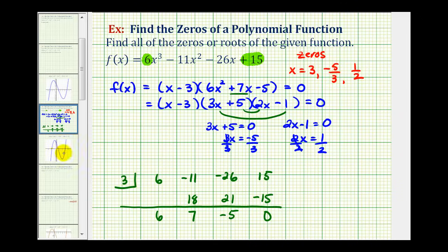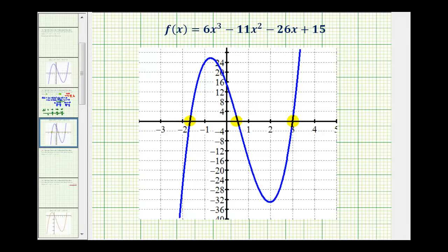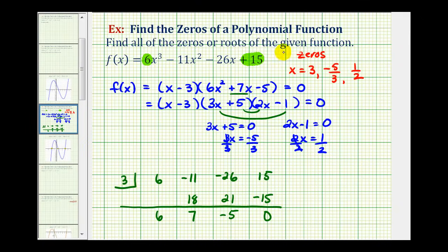But if we go back and take a look at the graph, we can pretty easily verify this is x equals negative 5/3, or negative 1 and 2/3. Here's our zero of positive 1/2, and of course, our zero of positive 3. Okay, that's going to do it for this example. We will be looking at several more examples in the next few videos.